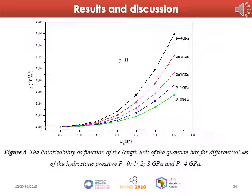We have calculated the polarizability of a magnetodonor placed at the center of the quantum box and evaluated the effects of hydrostatic pressure, magnetic field, and the size of the quantum box. In figure six, we present the polarizability of a donor impurity as a function of the width of the cubic box for different values of hydrostatic pressure. The polarizability increases with the increase of the size of the cubic quantum dot, due to compression of the wave function. The polarizability becomes more important when hydrostatic pressure increases. The hydrostatic pressure effect is negligible for small quantum dots (L less than 1.5), where geometric confinement is predominant, and becomes more significant for large quantum dots (L greater than 2).